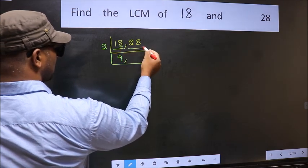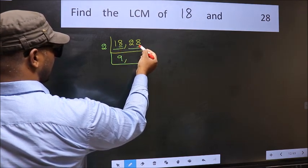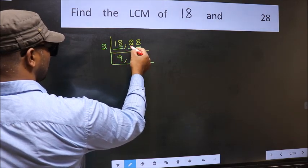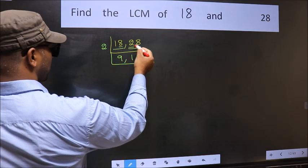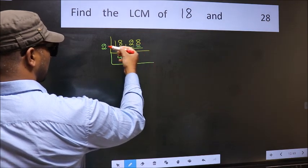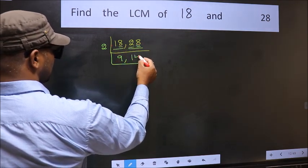Now the other number 28, last digit 8. So this is divisible by 2. First number 2, when do we get 2 in 2 table? 2 ones, 2. The other number 8, when do we get 8 in 2 table? 2 fours, 8.